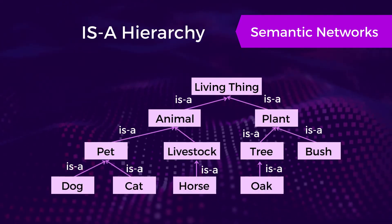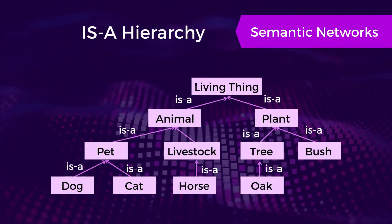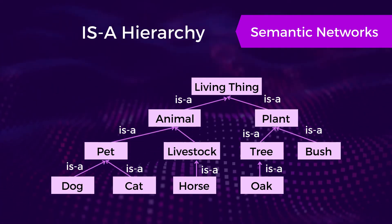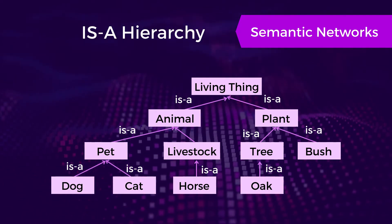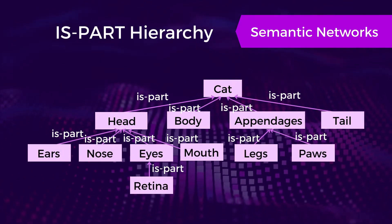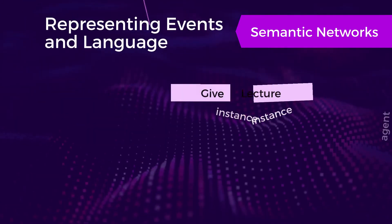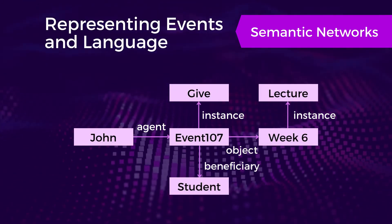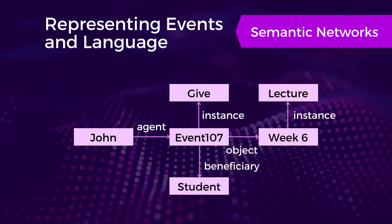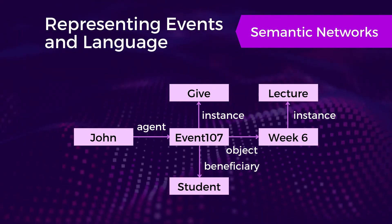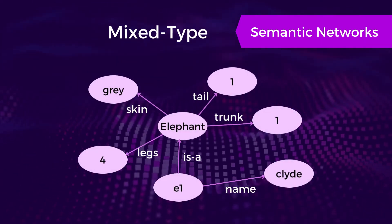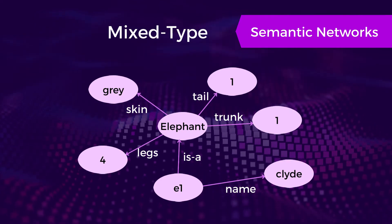There is also an is-a hierarchy semantic network. In this hierarchy, you can see that an object is a type of another object. For example, a cat is a pet, which is an animal, and is a living thing. There's also an is-part hierarchy that shows an object is a part of another object. A semantic network can also be used to represent events and language. In this example, you can see that John gave a WIG6 lecture to his students. WIG6 is an object of event 107. Finally, a typical semantic network can be in the form of a mixed type whereby different types of networks are combined.